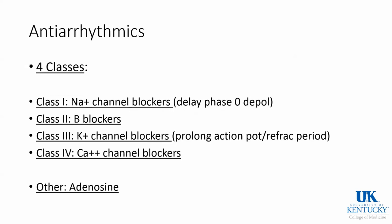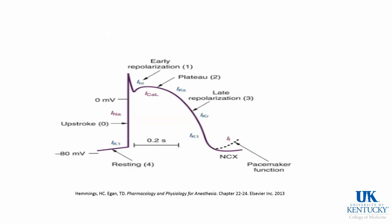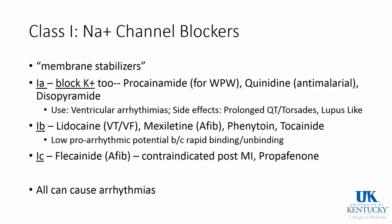The last drugs to discuss are the antiarrhythmics — four classes, then adenosine. The action potential involves sodium channels for phase zero depolarization, early repolarization with potassium channels, a plateau with calcium channels, later repolarization with potassium channels, and return to baseline — occurring in the ventricular muscle. Class 1 are sodium channel blockers or membrane stabilizers. Class 1A includes procainamide, quinidine, and disopyramide. Lidocaine is Class 1B, and flecainide is Class 1C. Even though these are antiarrhythmics, they can all cause arrhythmias.